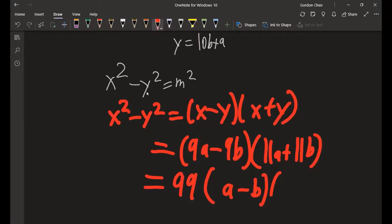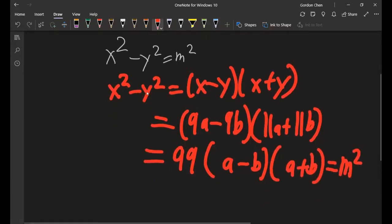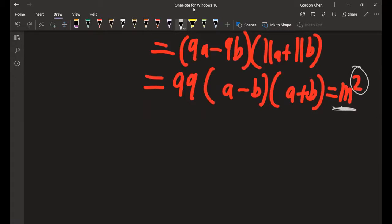So we know that we want this to be a square. So this is 3 squared times 11. So we know that one of a minus b or a plus b is a multiple of 11. And so a minus b, they're both digits, so that's impossible because 9 and the least digit is 0. So the maximum this can be is 9. So that means that a plus b is 11.